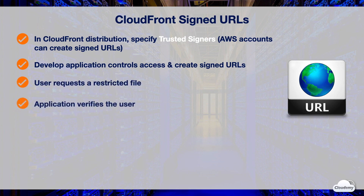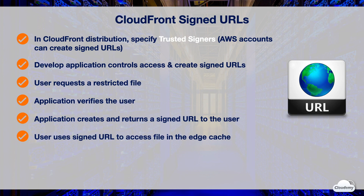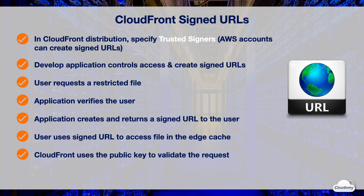When a user requests a restricted file, the application verifies the user — for example, it checks if the user has signed in as a paid member. If the user has rights to access the file, the application creates and returns a signed URL to the user. The signed URL gives the user access to the content in the edge cache. If a user is accessing the content in a web browser, the application returns the signed URL to the browser, and the browser immediately uses the signed URL to access the file in the CloudFront cache. CloudFront uses the public key to validate the signature and confirm that the URL hasn't been tampered with. If the signature is invalid, the request is rejected. If the signature is valid, CloudFront looks at the policy statement in the URL to confirm that the request is still valid — for example, if you specified a beginning and ending date and time, CloudFront confirms the user is trying to access your content during that time. If the request meets the requirements in the policy statement, CloudFront determines whether the file is already in the edge cache, forwards the request to the origin if necessary, and returns the file to the user.